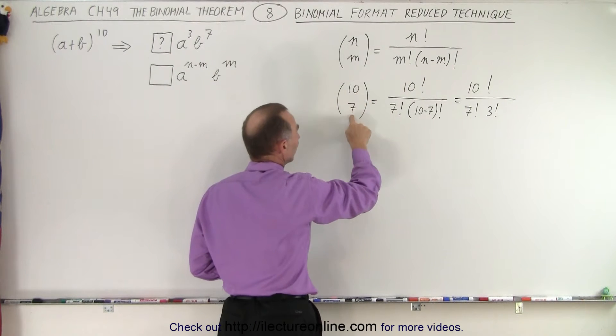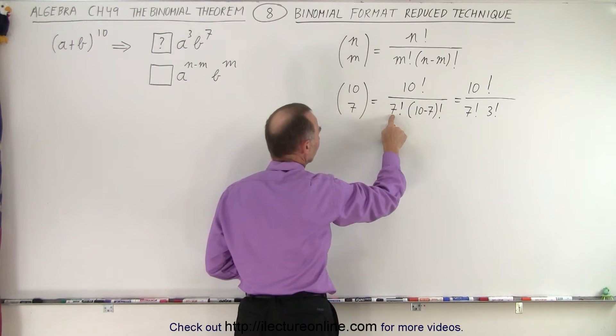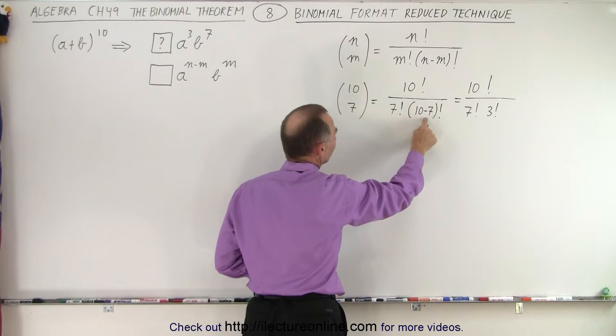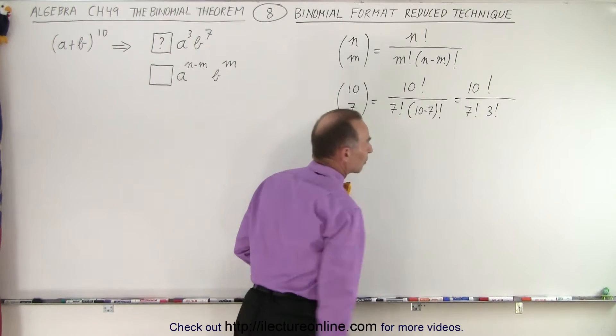For example, 10 and 7 means 10 factorial divided by 7 factorial, divided by 10 minus 7 factorial, or of course 3 factorial.